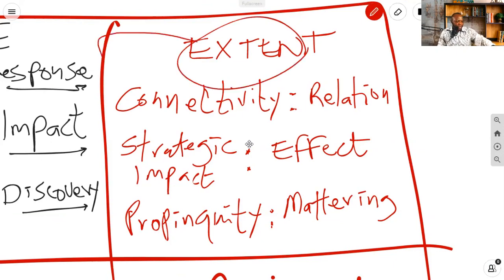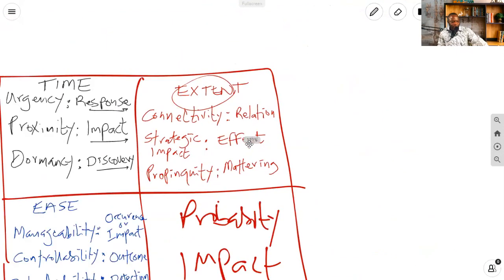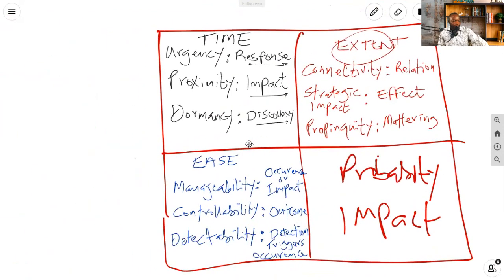Last but not least, we talk about extent of mattering. To borrow a word from a buddy, the risk doctor, where a risk is found to matter a lot, we say propinquity is high. So propinquity is the final one. So we've got urgency, proximity, dormancy, manageability, controllability, detectability, connectivity, strategic impact, and propinquity.